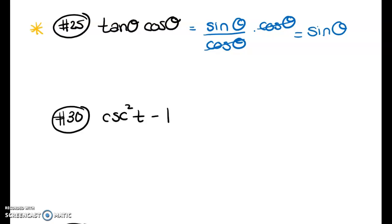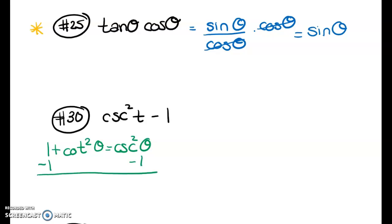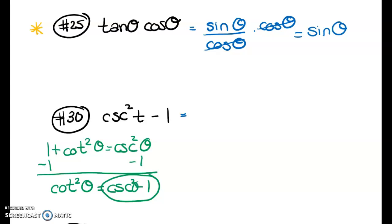For the next one, cosecant squared and one appear in a Pythagorean identity: 1 + cot²θ = csc²θ. Subtracting one from both sides gives the alternative form cot²θ = csc²θ − 1. So I can replace csc²t − 1 with cot²(t), which is one function raised to a power — satisfying the constraints.